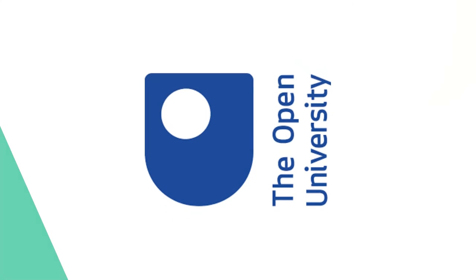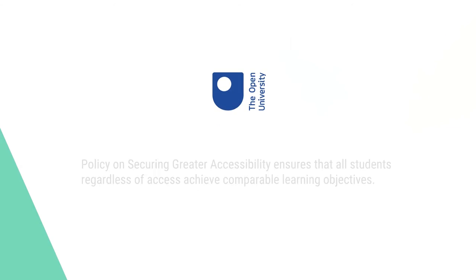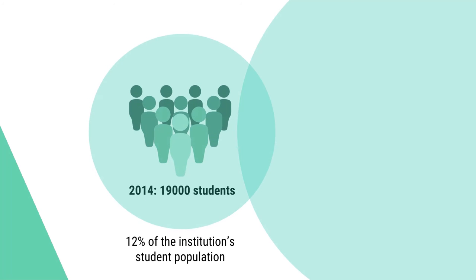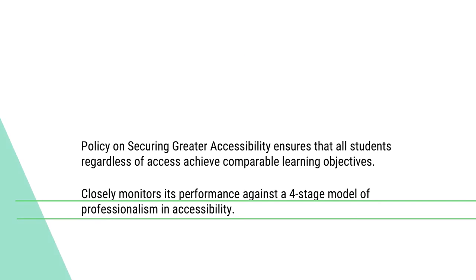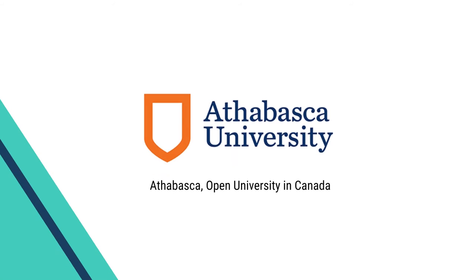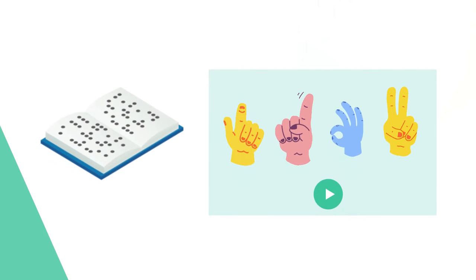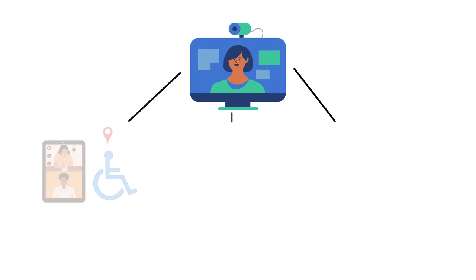There are different universities in the world which have supportive policies in favour of people with disabilities. For example, the UK Open University has a policy for securing accessibility for people with disabilities, and the number of people with disabilities attracted to the distance education system is very high — it was 19,000 in 2014. The performance of learners is judged against a four-stage model of professionalism and accessibility. In the Athabasca, the Canadian Open University, there are policies which support people with disabilities. The university provides course contents in accessible formats, access to assistive technologies, and examination accommodations.